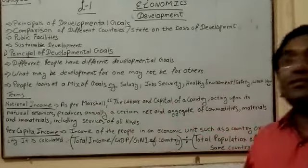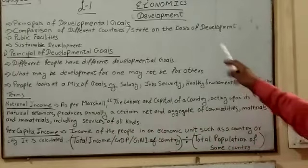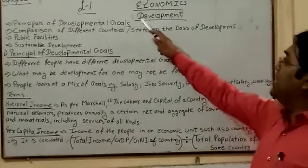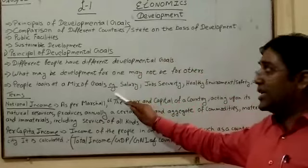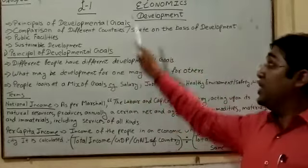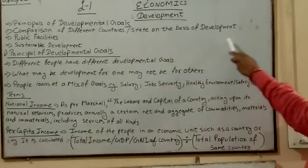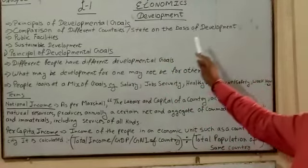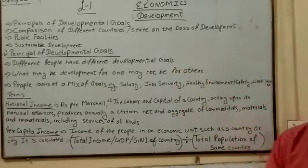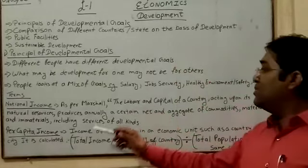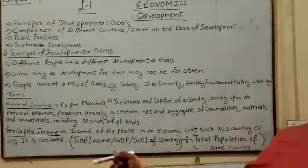Those are the bases of people looking at a mix of goals. Now, before we get on to the second topic — comparison of different countries — the principles of development goals conclude here. Second is comparison of different countries and states on the basis of development. Before discussing this, we should explain some basic terms: national income and per capita income.